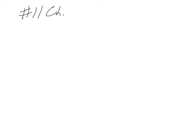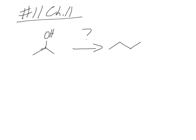Number 11 from chapter 11. It is going from isopropanol or 2-propanol, and we want to go to 1-propanol. From 2-propanol to 1-propanol. So how would this take place?